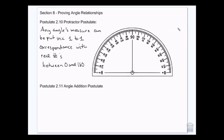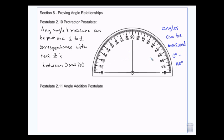The ruler postulate said that the length of a segment can be put into correspondence with real numbers on a number line — basically, that line segments can be measured. Well, the angle measurement postulate says that angles can be measured, and that measurement is going to be between 0 and 180 degrees. We can use the protractor to do that, just as any line segment can be measured using a ruler or tape measure.